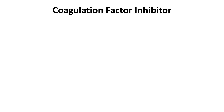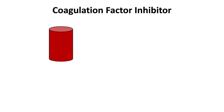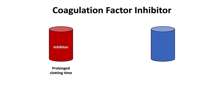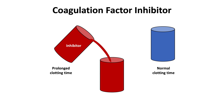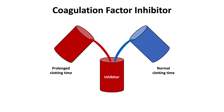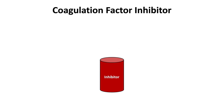When there is a coagulation factor inhibitor, the patient's plasma has a prolonged clotting time due to the presence of an inhibitor, and the control plasma has the normal clotting time. In the one-to-one mix, the patient's plasma contributes the inhibitor, but the control plasma is unable to overcome the inhibitor, so the clotting time does not correct.